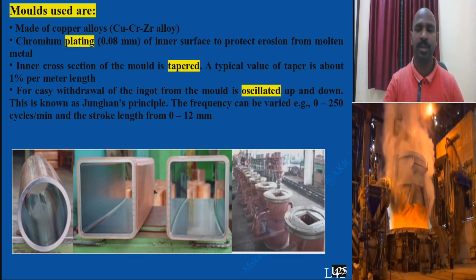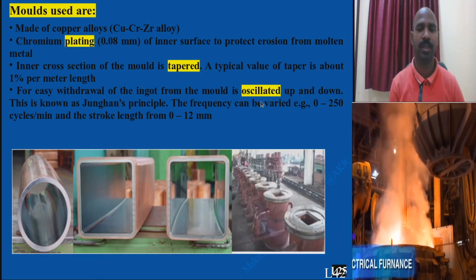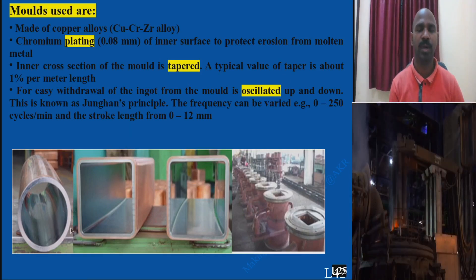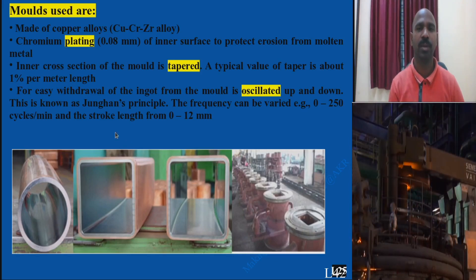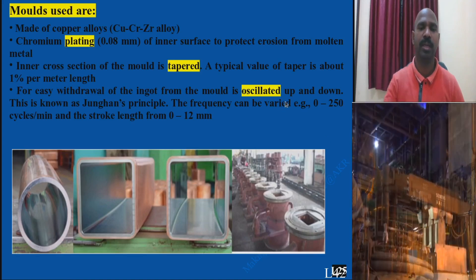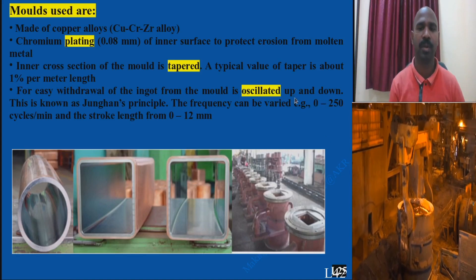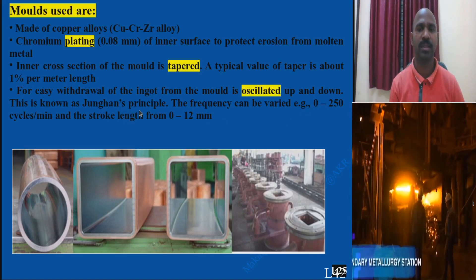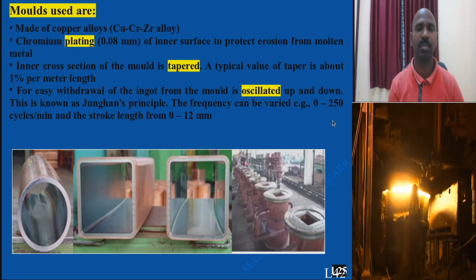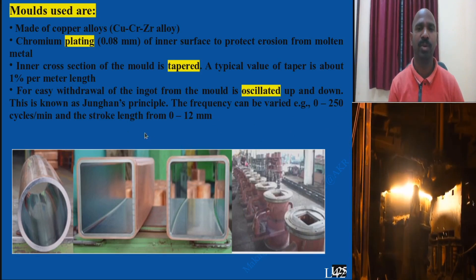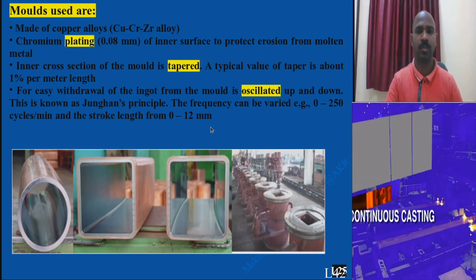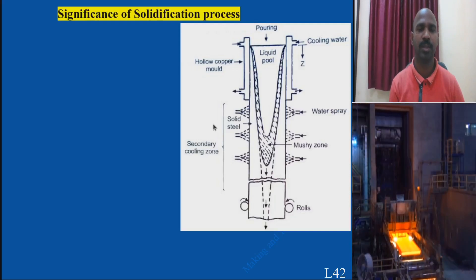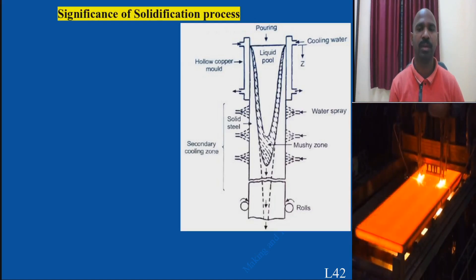The mold is also provided with oscillation. Why do you need oscillation? As the molten metal flows in the longitudinal direction, oscillation is provided in the transverse direction. In the case of ingot casting, up-and-down oscillation is used. This was developed by Junghans, which is why it is called the Junghans principle. The frequency maintained is 0 to 250 cycles per minute, and the stroke length amplitude is 0 to 12 mm.